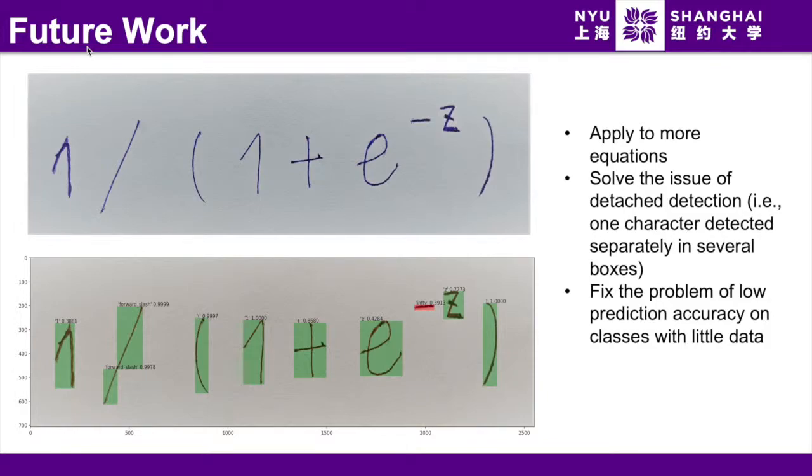Lastly, we want to fix the problem of low prediction accuracy on classes with little data. Since oversampling doesn't work, we could try more advanced algorithms, such as cluster centroid and SMOTE. We could also collect more data by ourselves. Since our ultimate goal is to convert handwritten mathematical equations into digital format, we could also collect data of equations in different layouts.